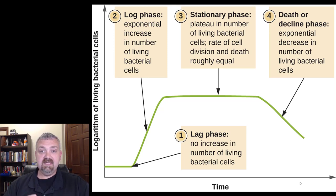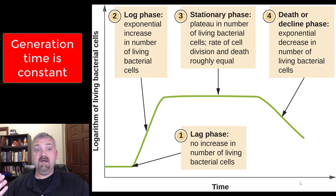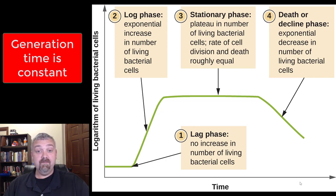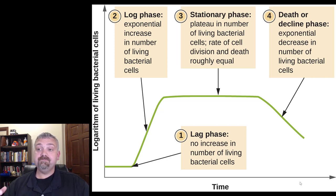It's called the log phase because we see exponential or logarithmic growth. The reason we see this logarithmic growth as a straight line is because the generation time is now constant. The generation time is how long it takes for an organism to divide and for the population to double. Some organisms like E. coli have a generation time that's really low, like 20-21 minutes.